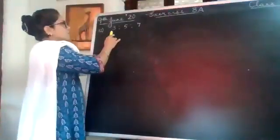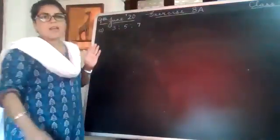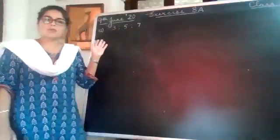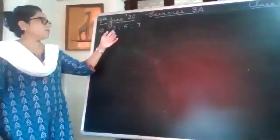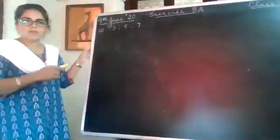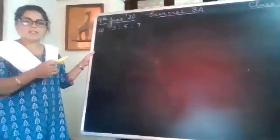We have the ratio 3 is to 5 is to 7, and this is the ratio between the angles of a triangle. We need to find out the measure of each of the three angles of the triangle.